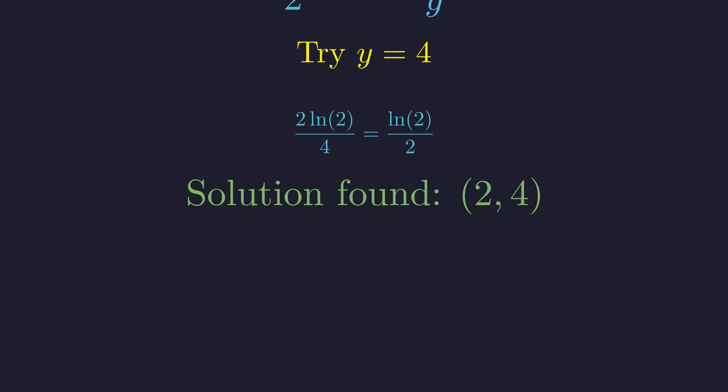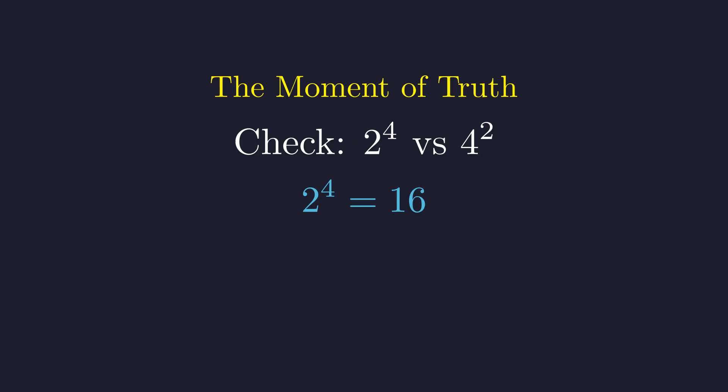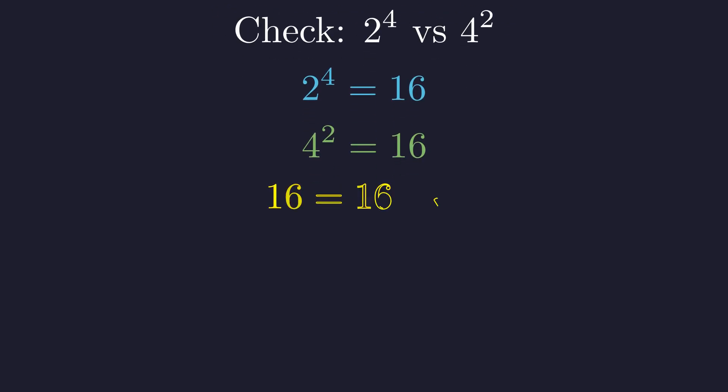We found it. The pair 2, 4 is a solution to our impossible-looking equation. Let's verify this works in the original equation. This is the moment of truth. Does 2 to the fourth power really equal 4 to the second power? 2 to the fourth is 16. 4 squared is also 16. Perfect equality. Our mathematical detective work paid off.